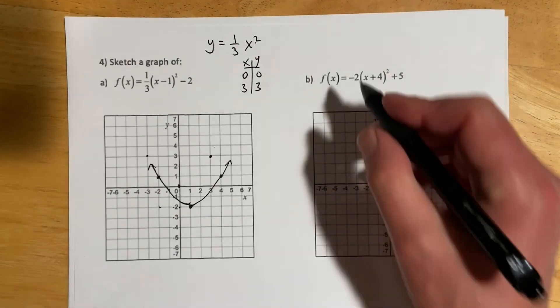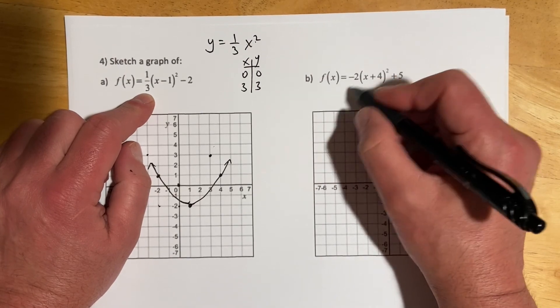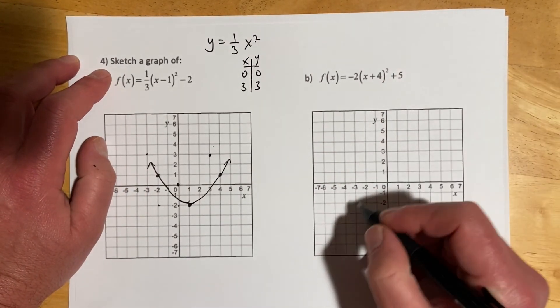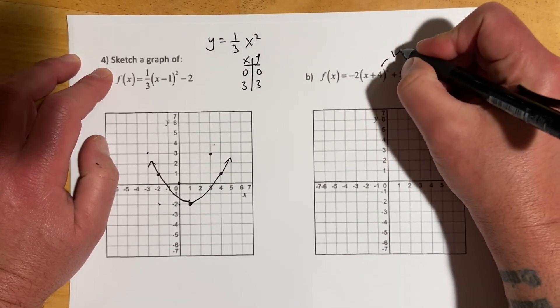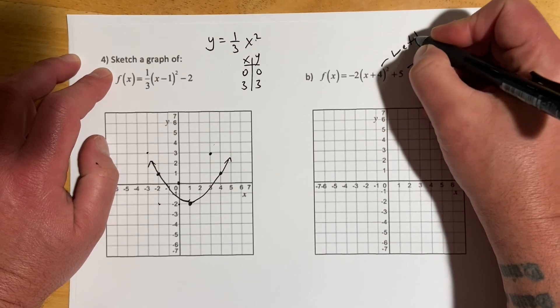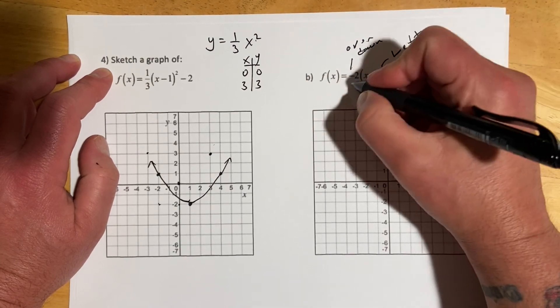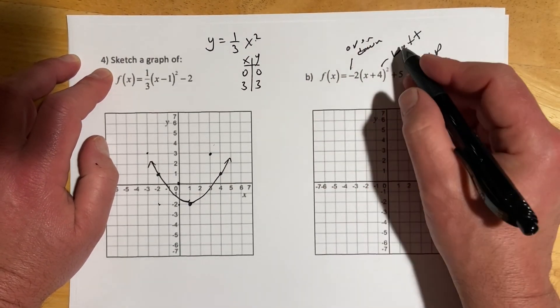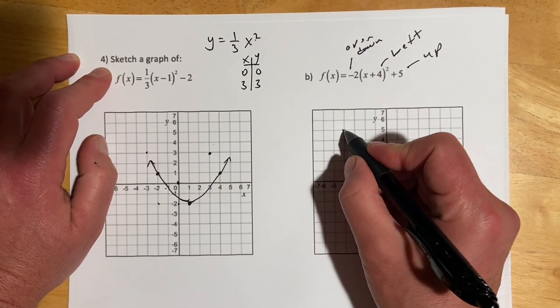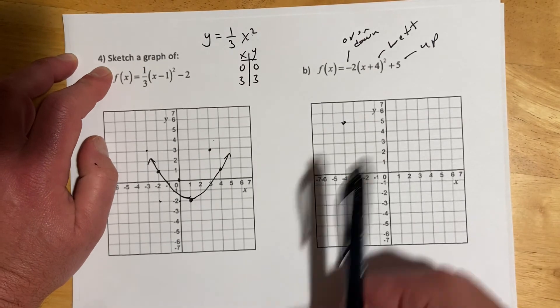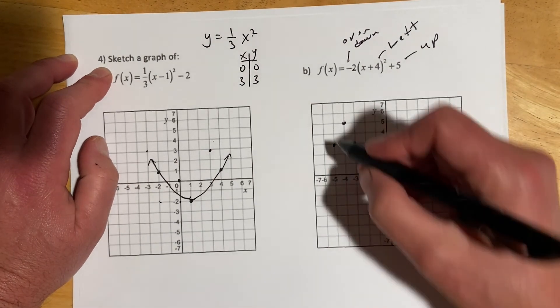And then this one, so the fractions are definitely harder. The whole number is pretty easy, because we'll just go over one, up two, instead of up one or down one in this case. So we got, let's see, up five. We have left four. And then it's going to open down because of the negative, and then stretch by two. So let's get over to our vertex. We're going to go left four and up five would be right there. It's going to open down. And then this two is just going to make it stretch by a factor of two.